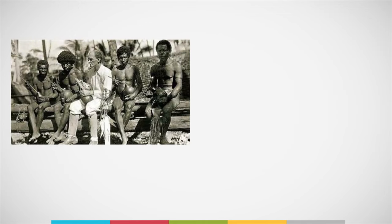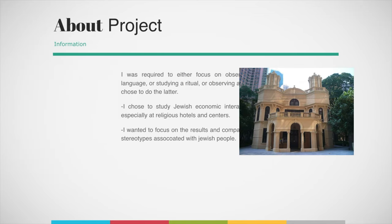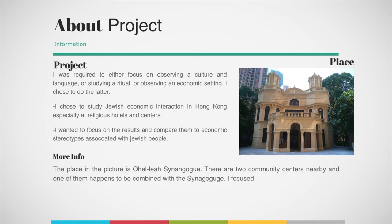An example of this includes the picture of a white man, Malinowski, studying the culture of native Pacific Islanders from the Trobriand Islands. Now, for my project, I was given three choices: first, interview a non-English speaking immigrant who came to Hong Kong for no more than two months; second, study the economic interaction of people in some kind of economic environment, like a flea market; and third, observe a religious ritual of a non-Christian religion. I chose to do the second one — economics.